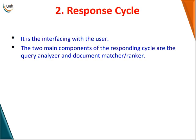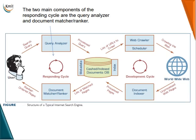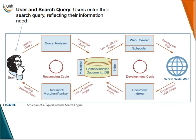Next, let us discuss the responding cycle. It is the interface with the user. The two main components of the responding cycle are the query analyzer and the document matcher or ranker. The user enters their search query reflecting their information need — for example, the user enters some keywords in a search engine like Google.